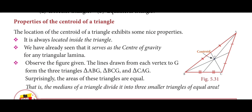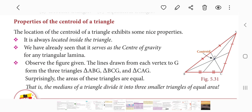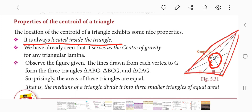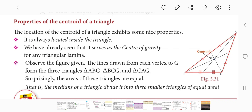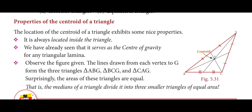Properties of the centroid: it is always located inside the triangle, and it serves as the center of gravity for any triangular lamina. Lines drawn from each vertex to G form three smaller triangles — from A to BC, B to AC, and C to AB.